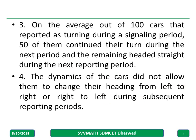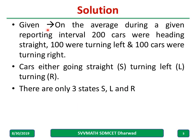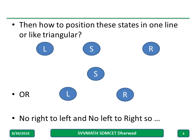Now we will consider the model. Given data: on the average during a given reporting time, 200 cars were heading straight, 100 were turning left, 100 cars were turning right — totaling 400. Let us mark straight as S, left as L, and turning right as R. There are only three states: S, L, and R.